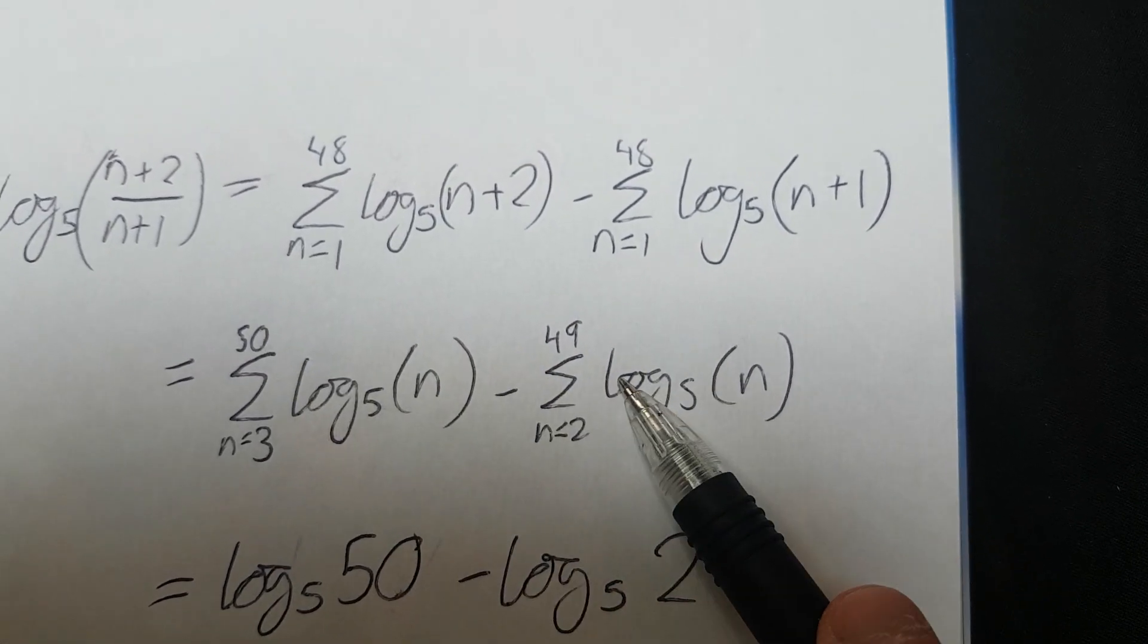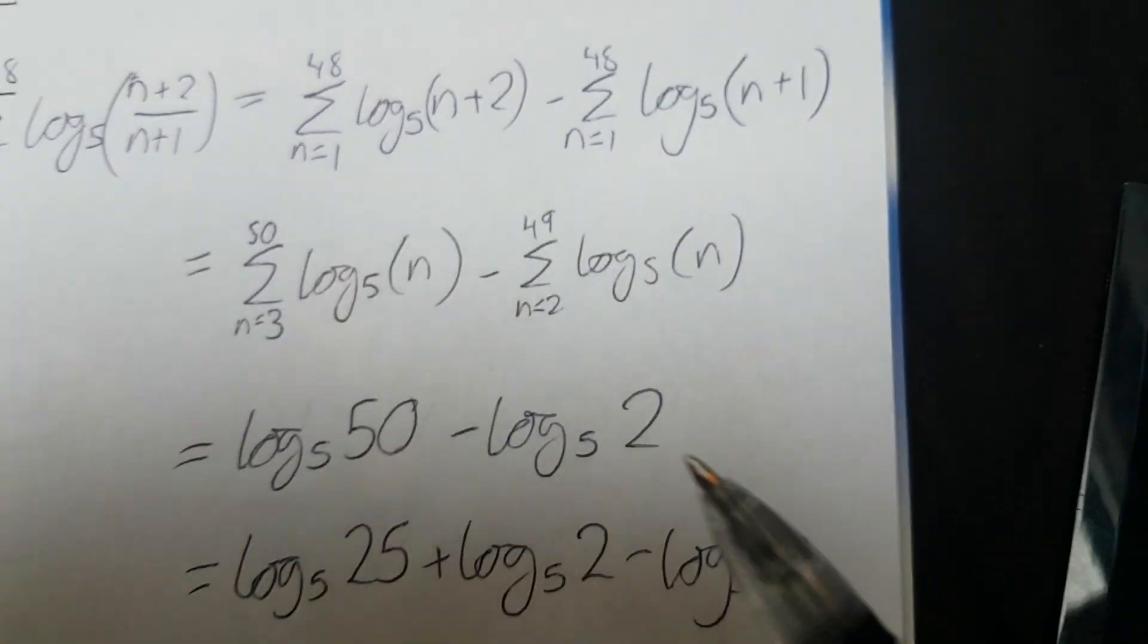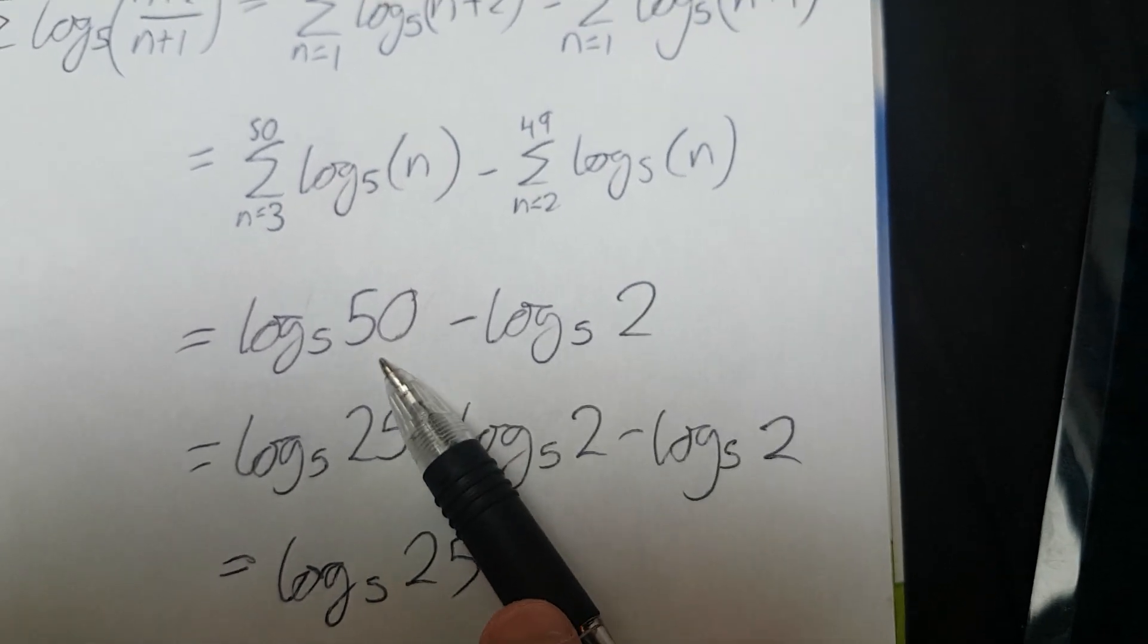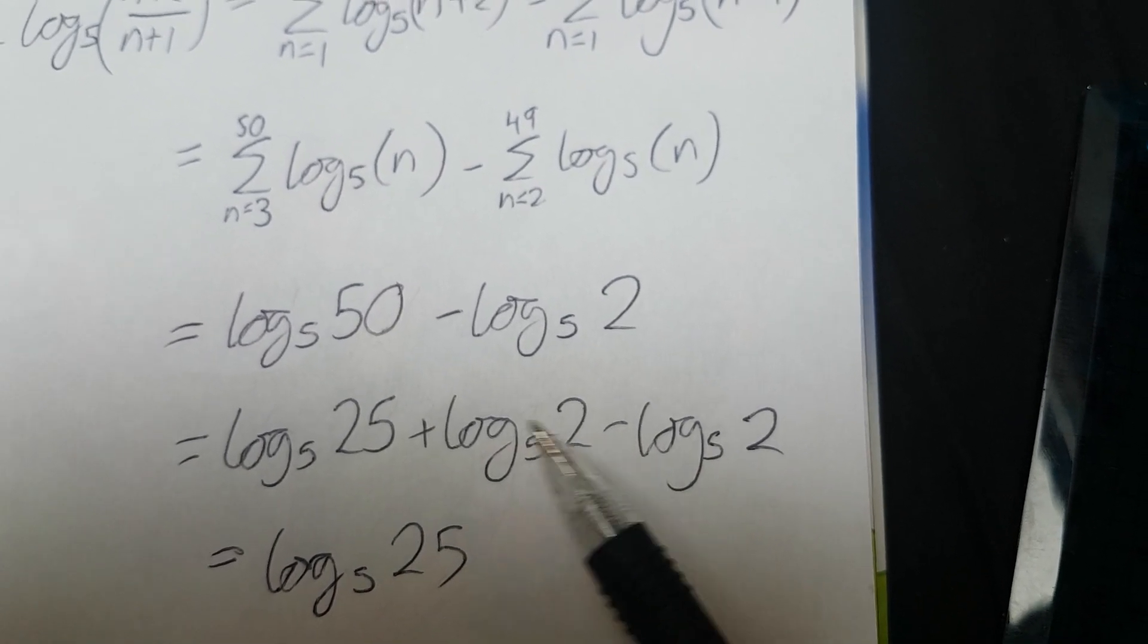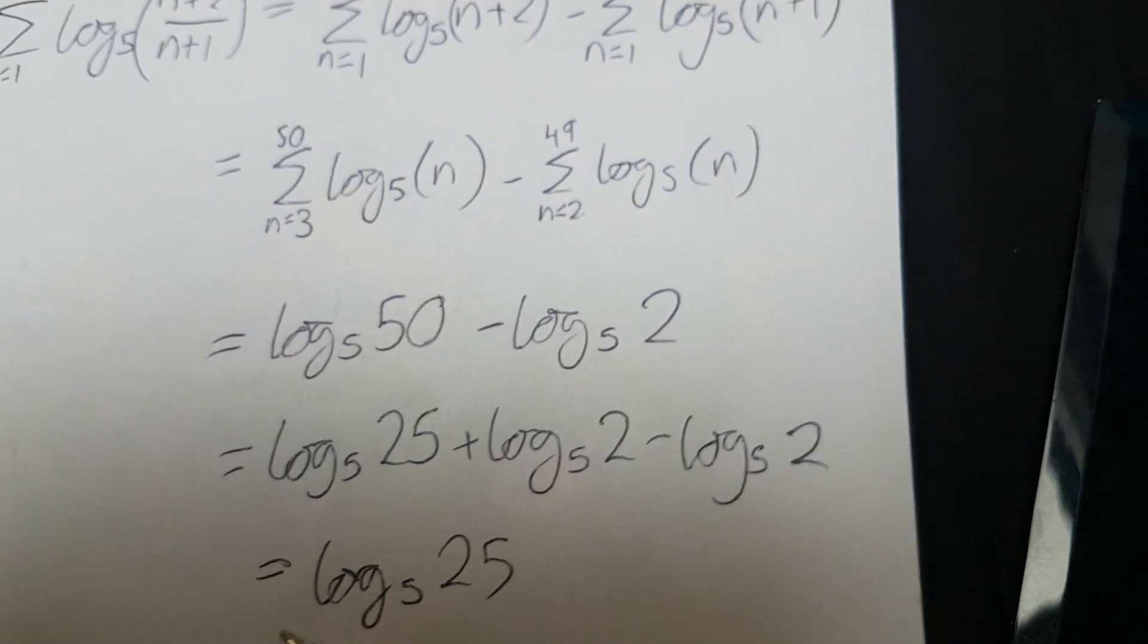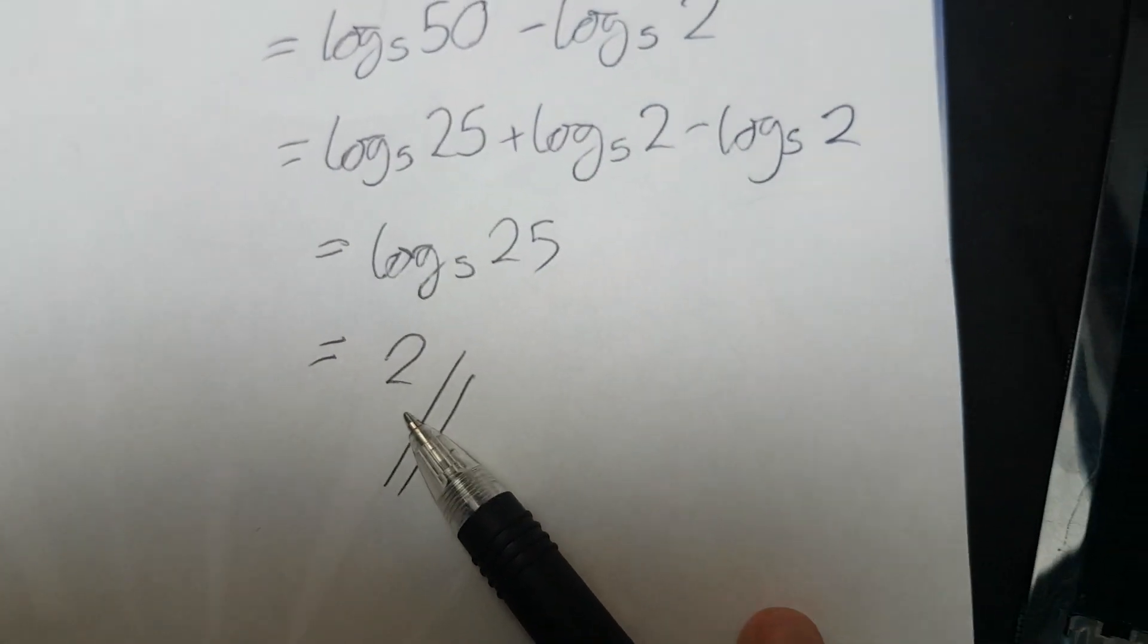Because here you've got the 50, but here you don't. And here you haven't got a 2, but here you're taking away a 2. So you've got 50 to 2. And then you can use your log rules and see that 50 is 25 times 2. So your log will be log 25 plus log 2 minus log 2. These log 2s obviously cancel, so you're left with log_5, 25, which is just the answer of 2.